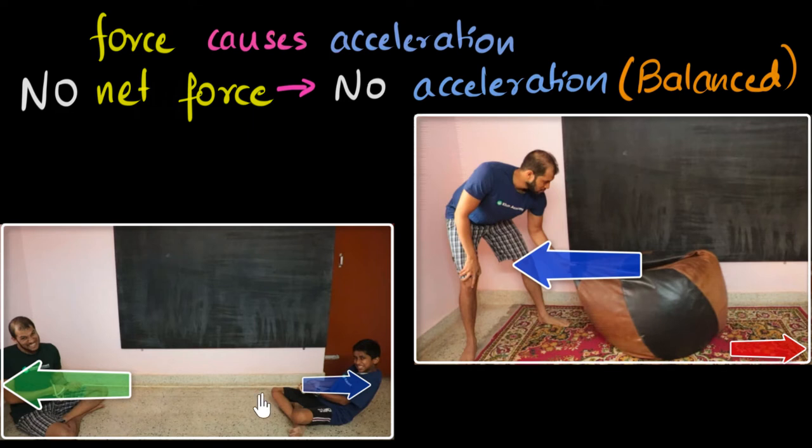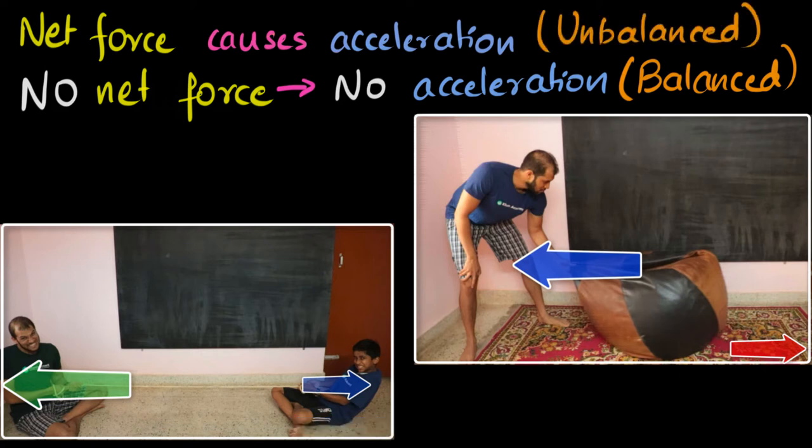And so, whenever the forces don't cancel out, that's when we have acceleration. So in general, we'll say a net force causes an acceleration. This means forces shouldn't cancel out. In other words, the forces should be unbalanced. That's also what we can write. An unbalanced force causes acceleration. So if the forces are balanced, then there is no net force, no acceleration. Otherwise, we will get an acceleration.